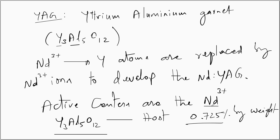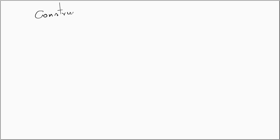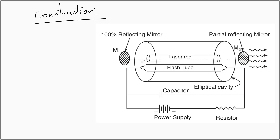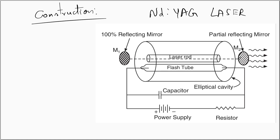Now we shall look at the construction. This is the schematic diagram of the Nd:YAG laser. We have a reflector in the form of an elliptical cylinder. There is a flash lamp at one focus of the elliptical cylinder, and at the other focus we have the Nd:YAG rod — the laser rod. On both sides of the laser rod we have mirrors: on the left side a 100% reflecting mirror, and on the right side a partially reflecting mirror M2.